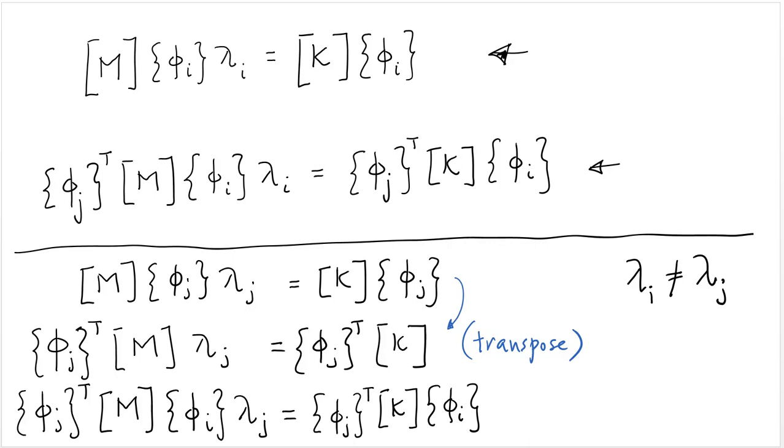Since k and m are symmetric, m transpose and k transpose are simply k and m. And then we post-multiply, so that means we multiply from the right-hand side by phi i here, we obtain these two equations.